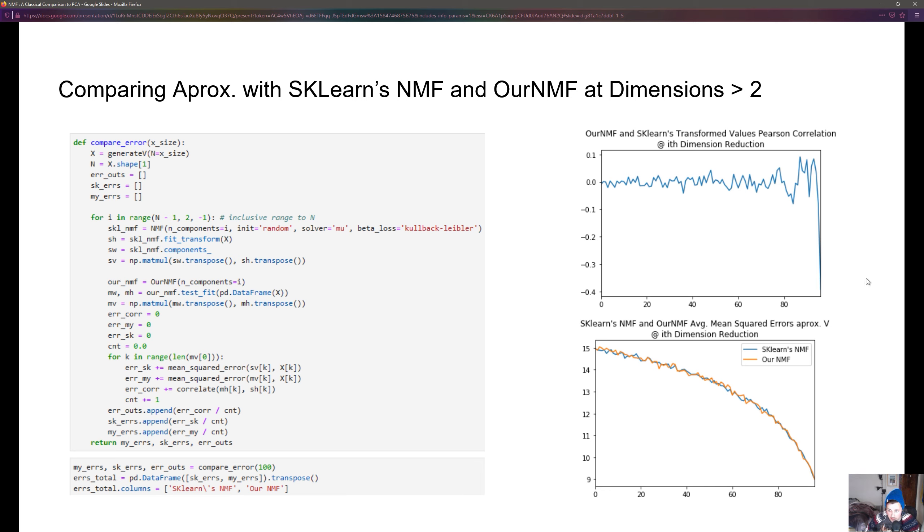Looking at the top graph we can see that at the start of the dimensionality reduction, and this is for a matrix of 100 by 100, our basis vectors or our transformed values do not correlate but slowly they actually trend towards zero.